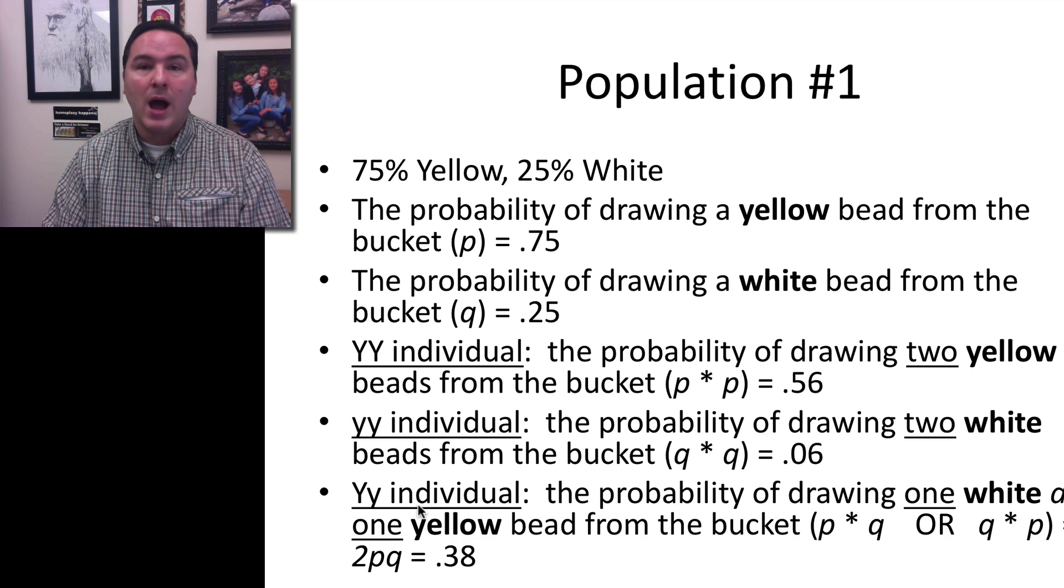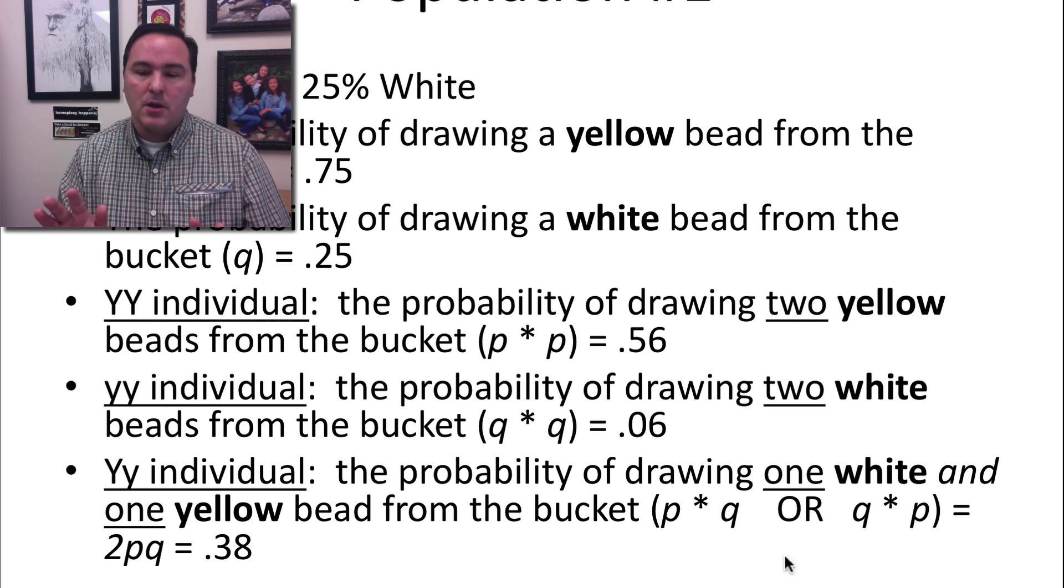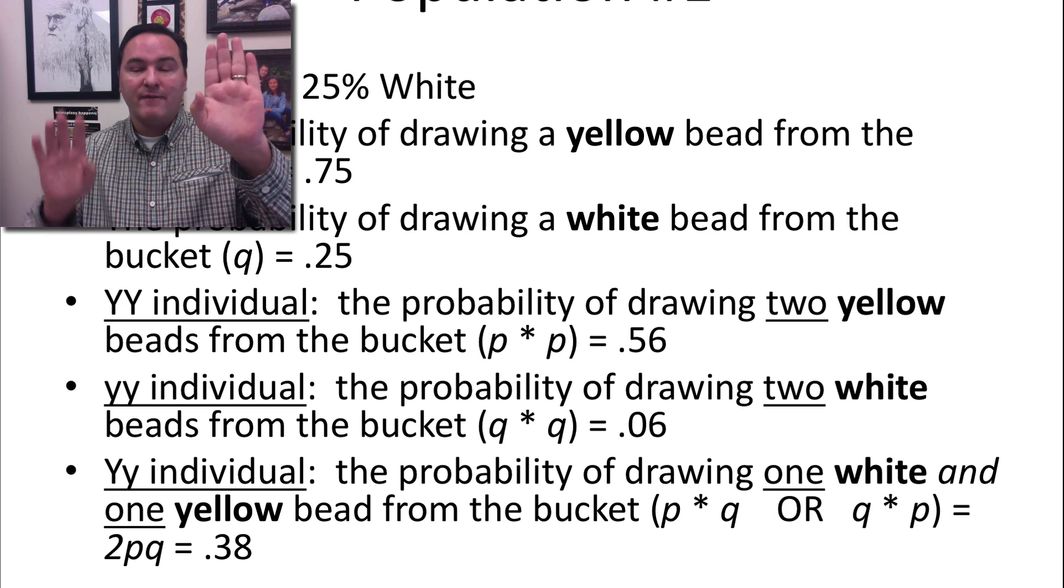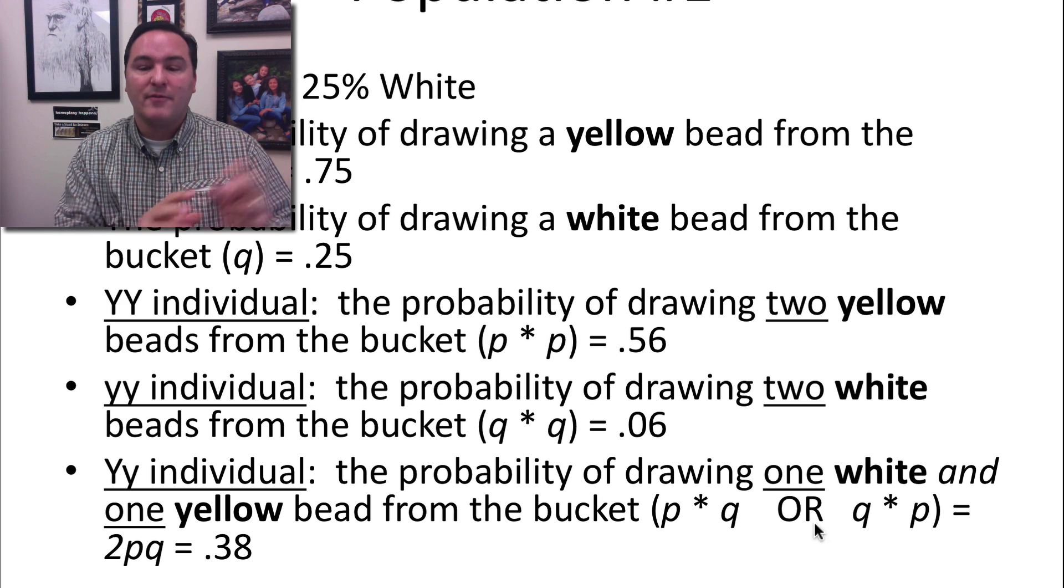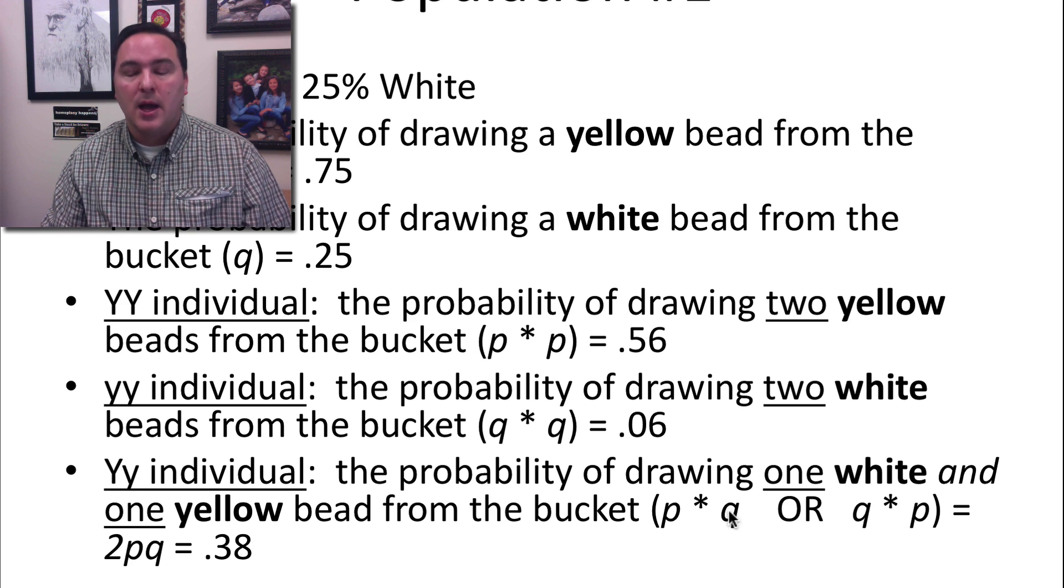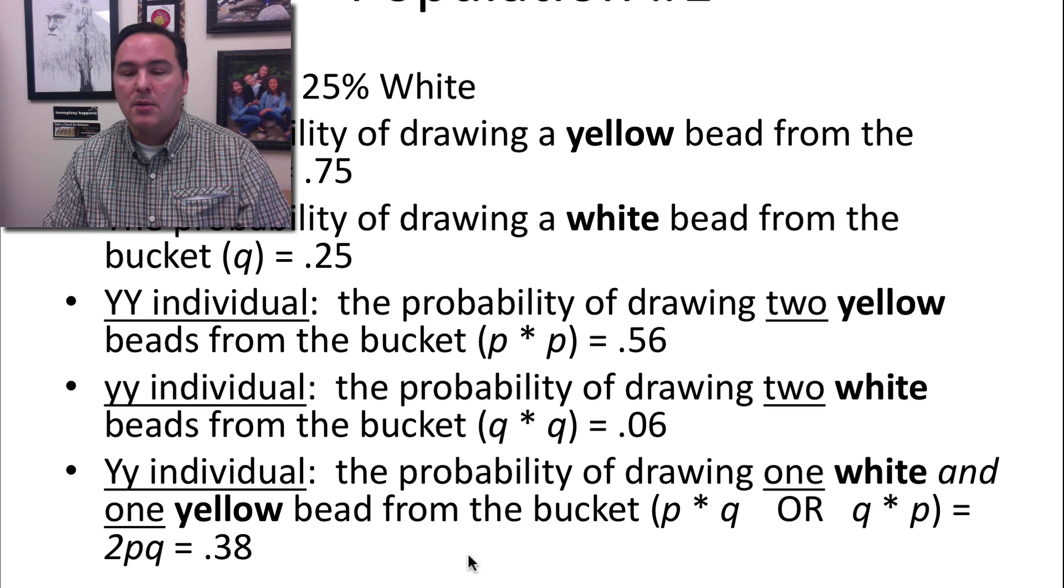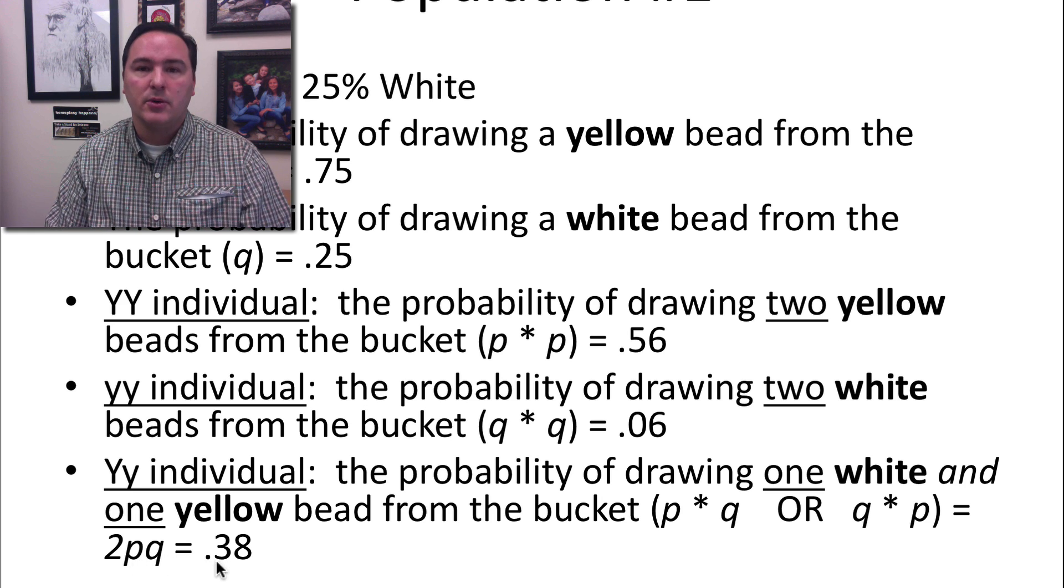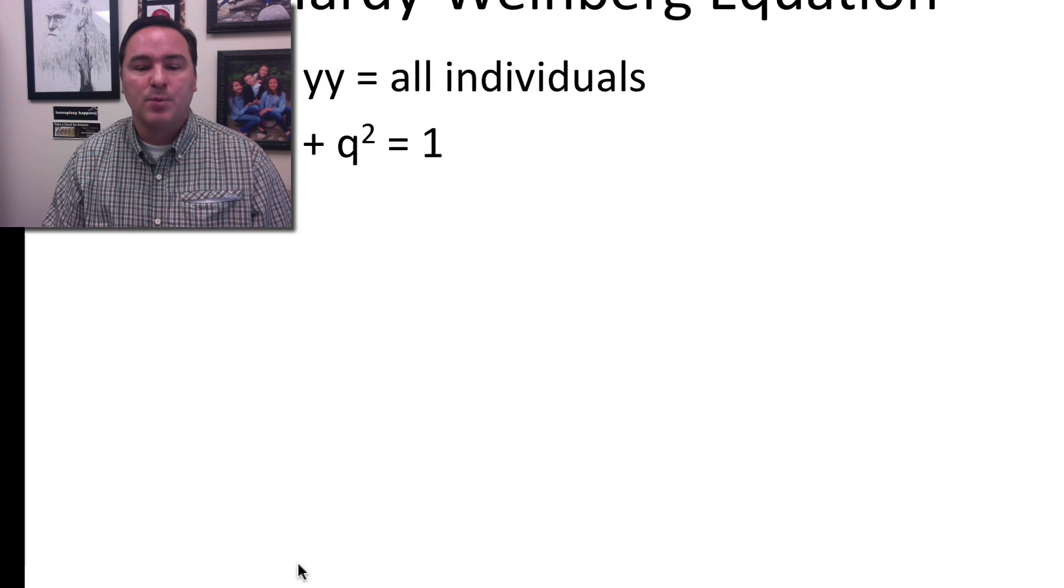And the probability of a big Y little y is the probability of drawing one white and one yellow. But because it could be a big Y from one parent and a little y from another parent, but it also could be a little y from the first parent and a big Y from the second parent. So therefore it's an or statement. And if you remember from our rules from probability, that then means we need to add these things together. So it's actually P times Q plus Q times P, or you can change that into 2PQ. And that equals then 0.38. So it's 2 times 0.75 times 0.25 equals 0.38.